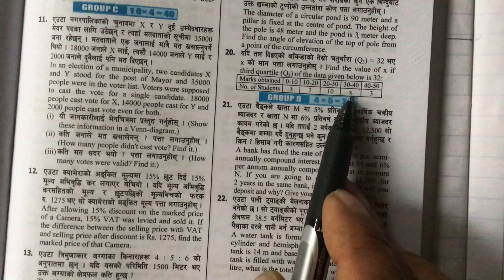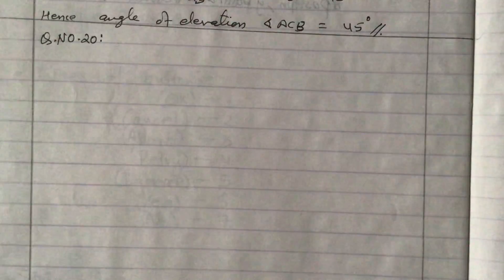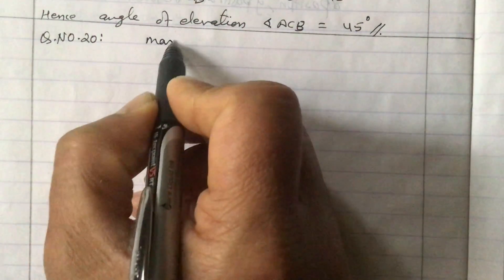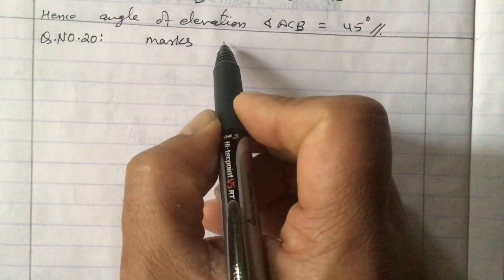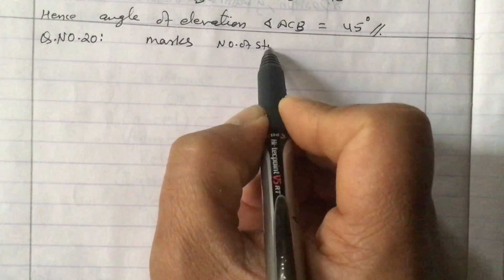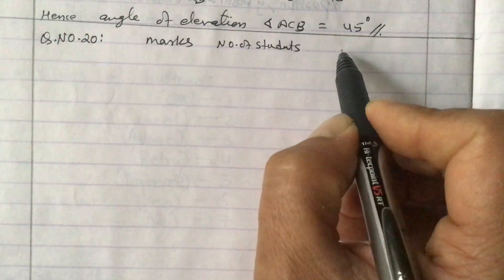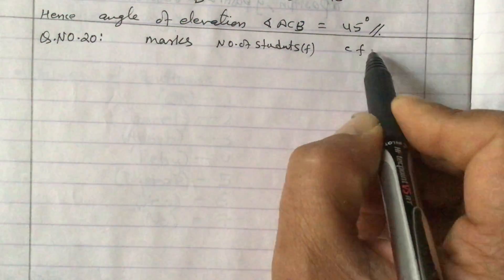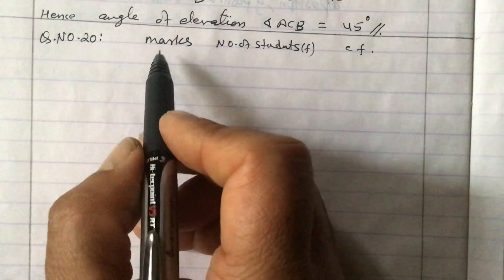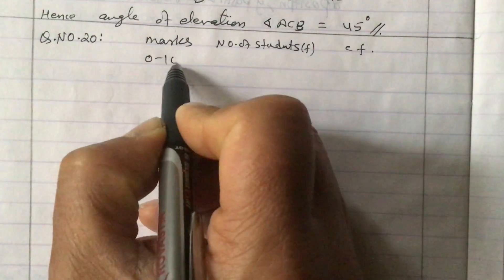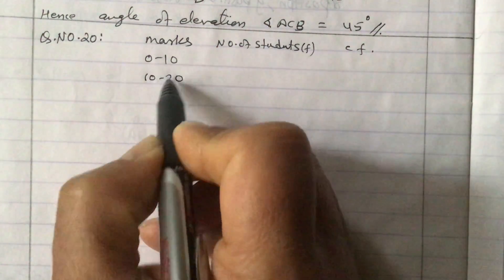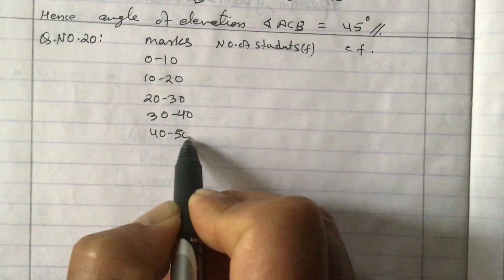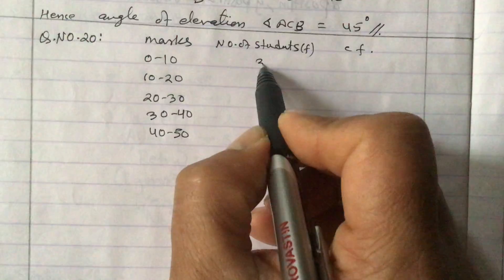So let us make a table first of all. In the table, it is given that first marks obtained, then number of students, and then frequency. Now we need cumulative frequency also. So marks here is given from 0 to 10, 10 to 20, 20 to 30, 30 to 40, and 40 to 50.